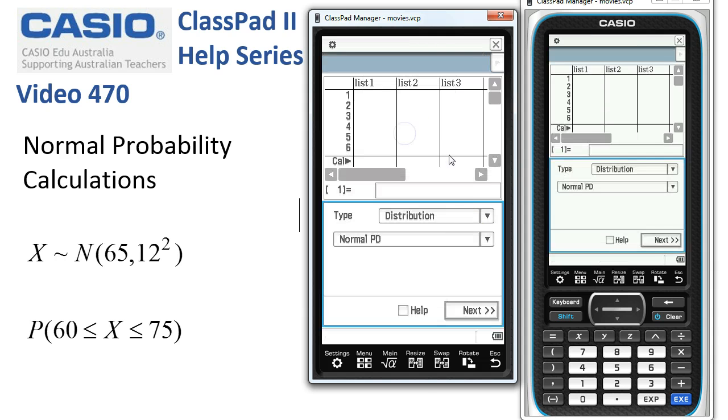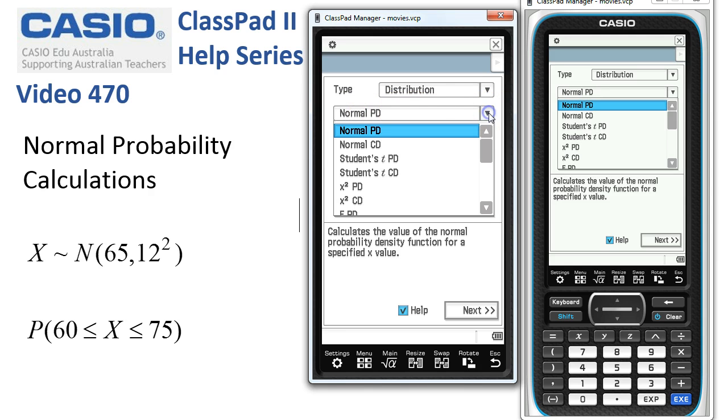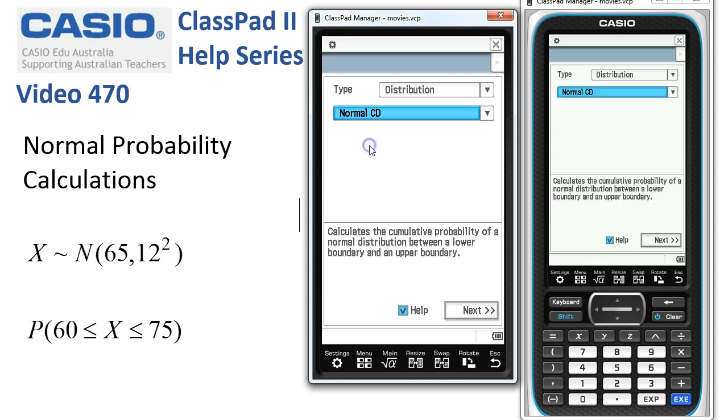Under distribution, I like to tap help so that when we go to this drop-down menu you get a much larger listing. Here's the one we're after: normal cumulative distribution.